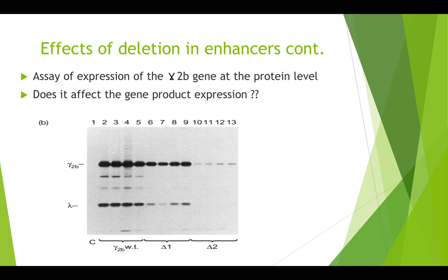To detect efficiency of expression, they incorporated labeled methionine into newly made proteins, then immunoprecipitated the labeled gamma2b protein with an antibody directed against gamma2b. They electrophoresed the immunoprecipitated protein and detected them by autoradiography, as seen in this figure. Lane 1 is a control from untransfected plasmacytoma cells, and since no bands immunoprecipitate, it shows there is no non-specific binding of plasmacytoma proteins to the affinity column.